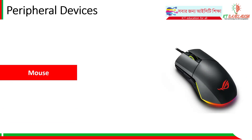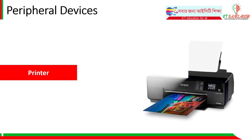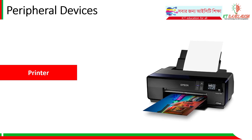A mouse is used for clicking — left click, right click, and scroll. It is an input device that provides signals to the computer. A printer is used to print documents — it can print in color or black and white, and it is an output external peripheral device.